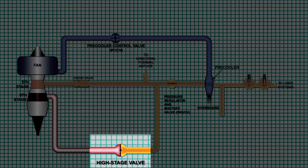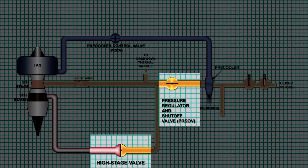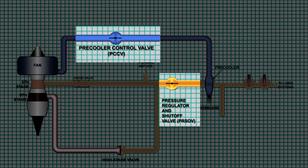The high-stage valve, or HSV, and the pressure regulating and shutoff valve, or PRSOV, work together to control bleed air pressure. The PRSOV and the pre-cooler control valve, or PCCV, work together to control bleed air temperature.